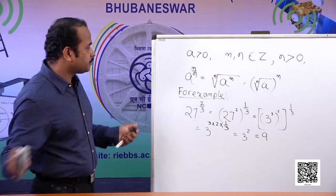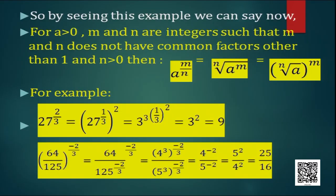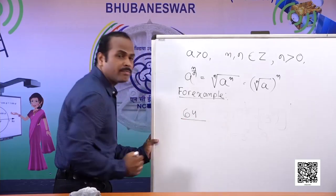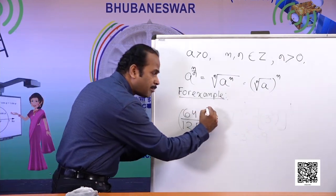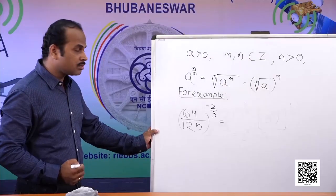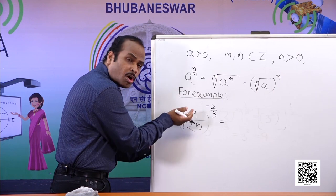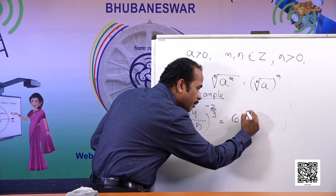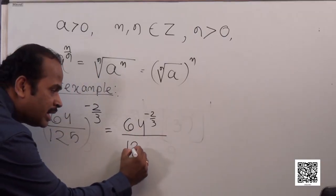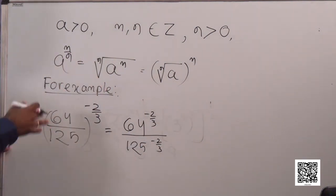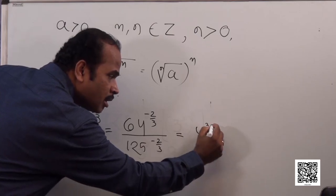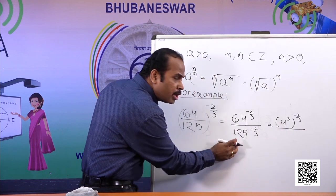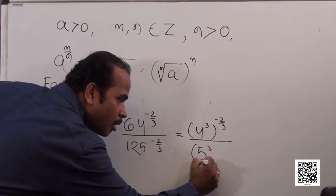Let us try another example: (64/125) to the power minus 2 by 3. Since the base is a rational expression, I can write it as 64^(−2/3) divided by 125^(−2/3). Now 64 is 4 cubed and 125 is 5 cubed, so this becomes (4³)^(−2/3) divided by (5³)^(−2/3).